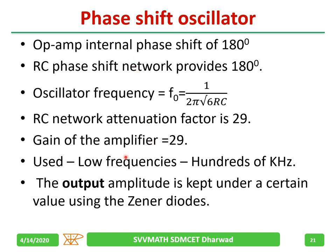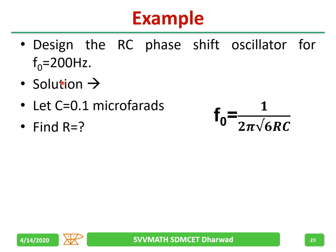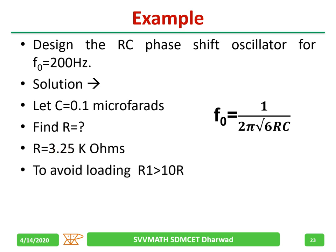In summary, the gain requirement is 29 and RC phase shift oscillators are used for lower frequencies — up to hundreds of kilohertz. Design example: given F₀ = 200 Hz, first select the capacitor value, then use the formula F₀ = 1/(2π√6·RC) to find R. We get R ≈ 3.25 kΩ — use a potentiometer. To avoid loading, choose R1 greater than 10R.